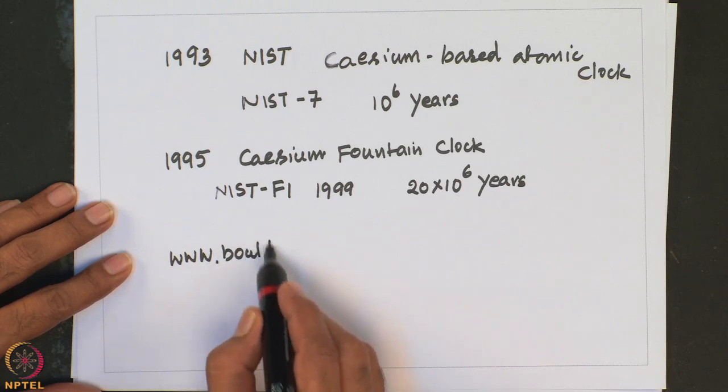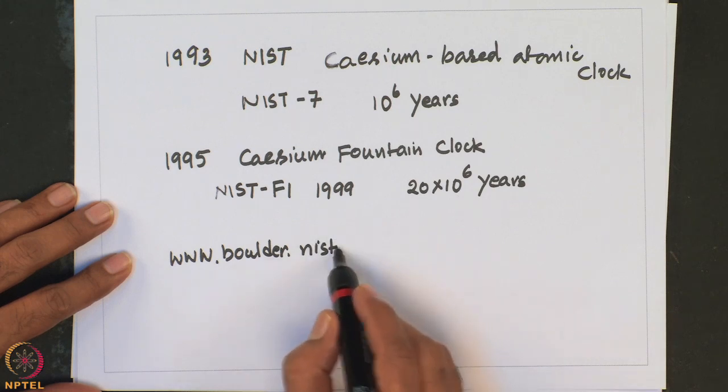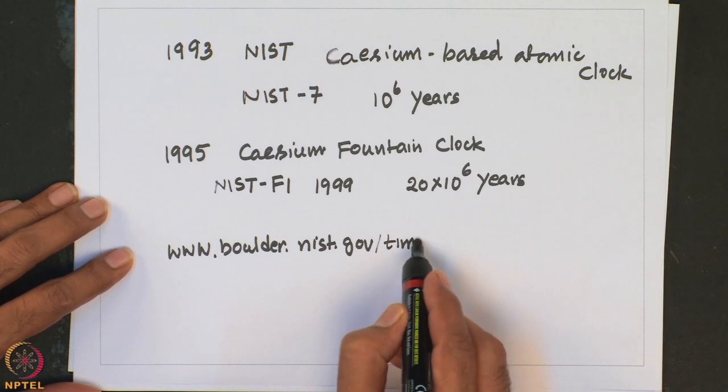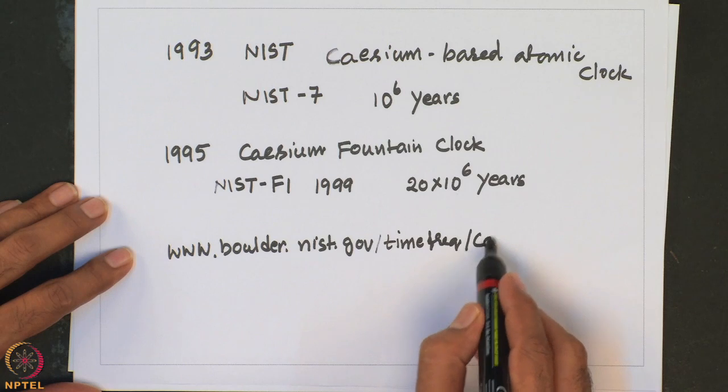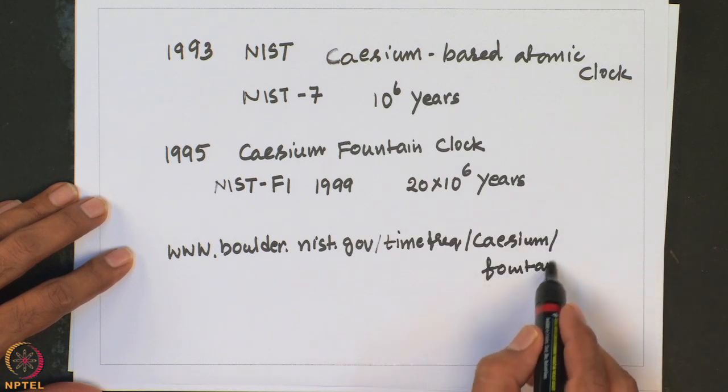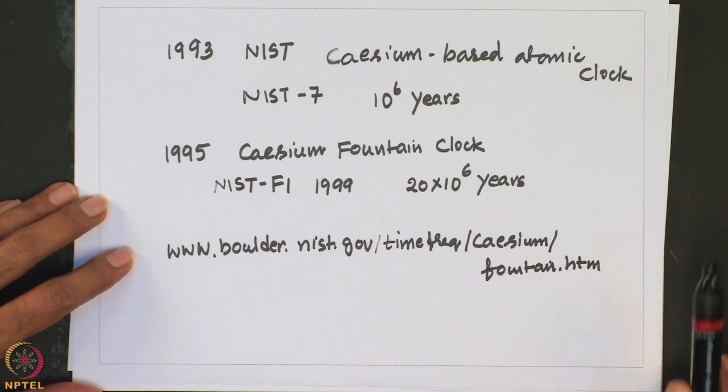While earlier cesium clocks observed cesium atoms at ambient temperatures, the cesium fountain clock uses lasers to slow down and cool the atoms to temperatures approaching 0 kelvin. For an online demonstration you can look into the website. This information is taken from the inorganic chemistry book by C. E. Housecroft and A. G. Sharpe; you can get more information from there.